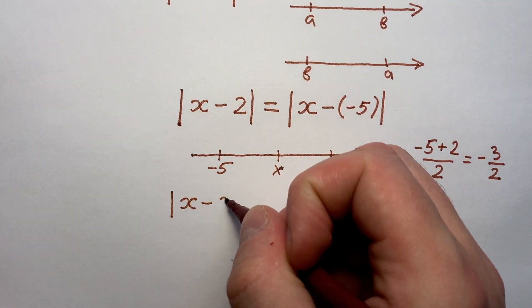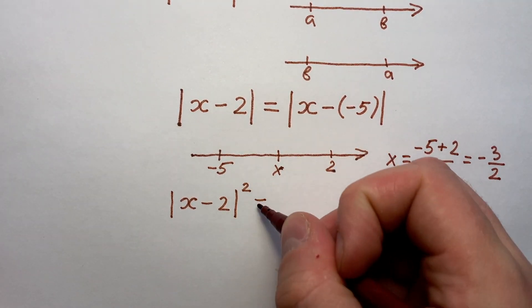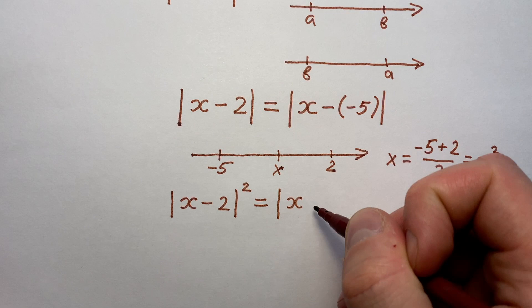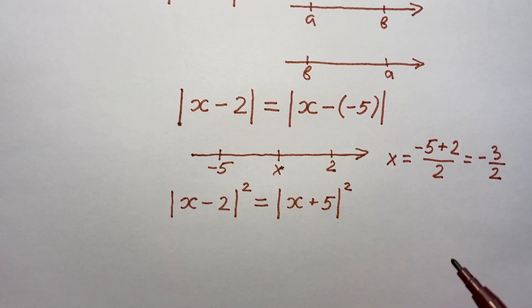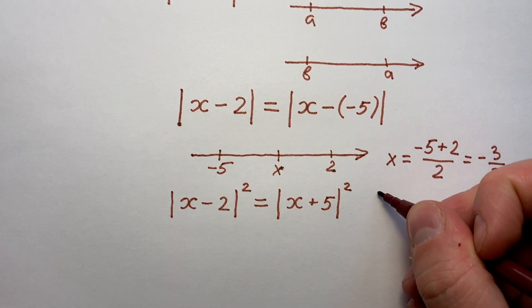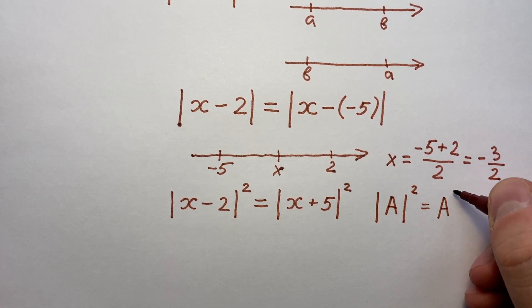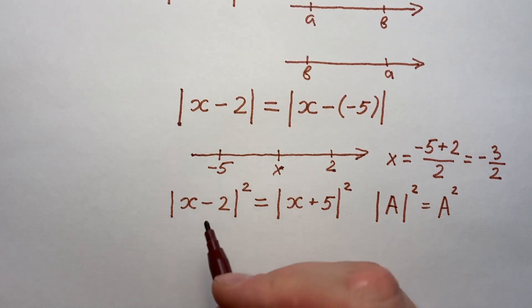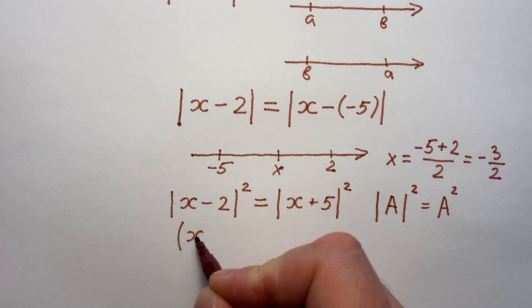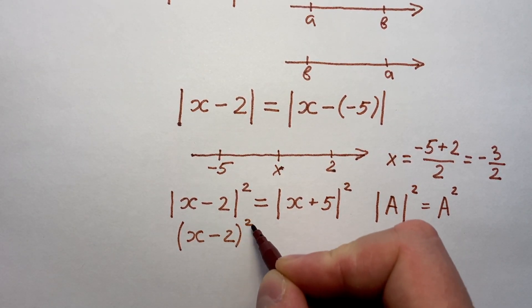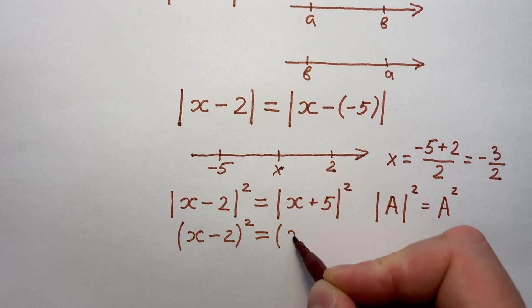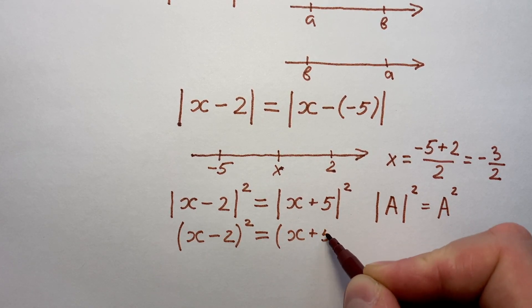So, we can firmly write X minus 2 to the power of 2 equals modulus X plus 5 to the power of 2. Knowing properties of modulus we understand that modulus of a function to the power of 2 equals the function to the power of 2. So, we can write this equation like bracket X minus 2 to the power of 2 equals bracket X plus 5 to the power of 2.